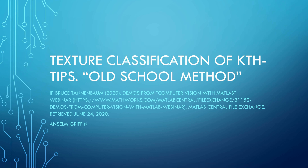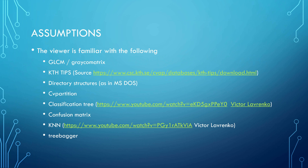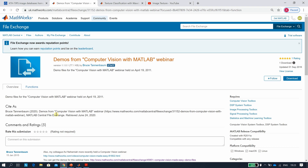Hello, Anselm Griffin here again with another YouTube tutorial. This is video number 261 and today we're looking at texture classification of images — the old school method. IP credit goes to Bruce Tannenbaum who wrote the code. I'll give more details in a minute. There are a lot of assumptions today, so I'm going to run through it without explaining in great detail — sorry about that. Topics include gray co-occurrence matrices, KTH-TIPS directory structures, cross-validation partition in MATLAB, and classification using a tree, KNN, and bagging.